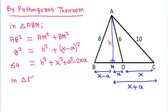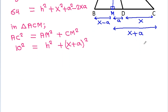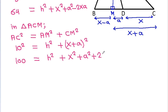And in triangle ACM, AC square it will be equal to AM square plus CM square. And AC is 10, so 100 is equal to H square plus CM which is X plus A square, giving 100 equals H square plus X square plus A square plus 2XA. This is equation 2.